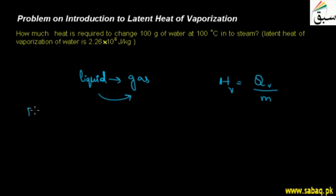In this case, we have data given. We can see what we have given and what we need to find out. First, how much heat is required—we have to find this for vaporization of 100 grams of water. That is the mass given.